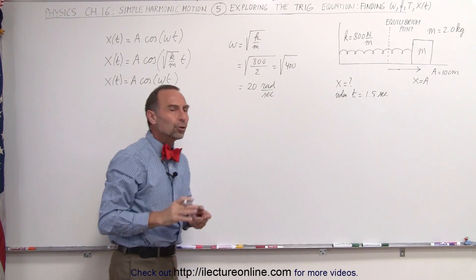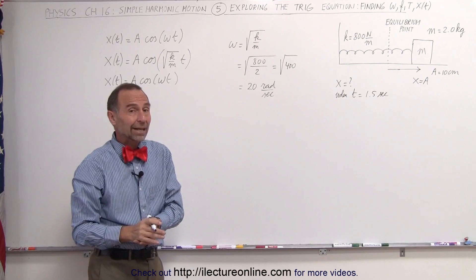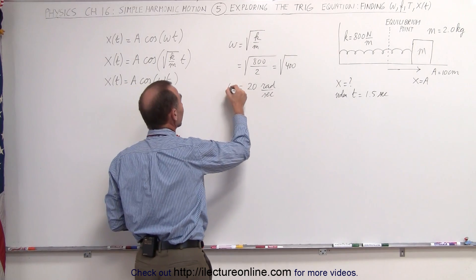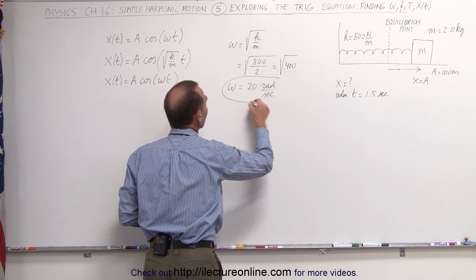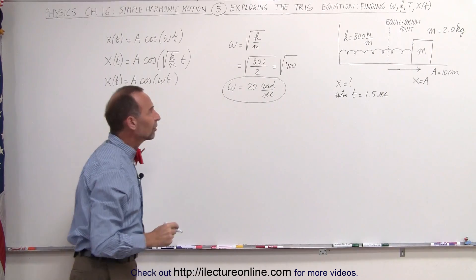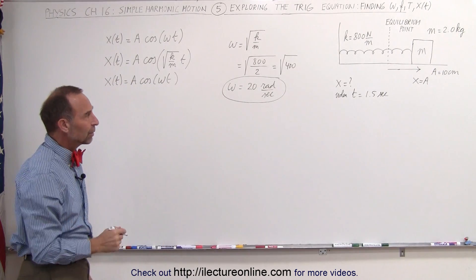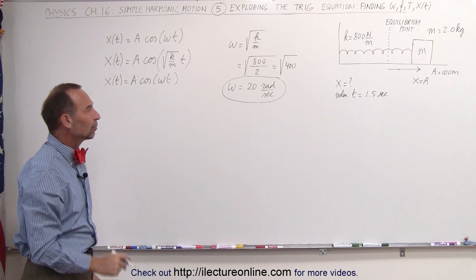Now radians is actually a non-unit, so we don't have to write radians, but I prefer to write radians because otherwise it can get quite confusing. So in this case omega, which is the angular frequency of motion, is equal to 20 radians per second.